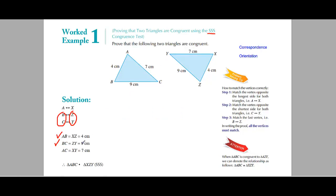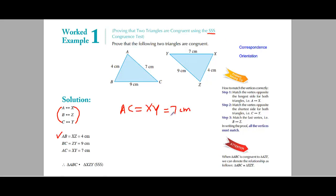The third comparison is AC with XY. AC is equal to XY, and both are equal to 7 cm.